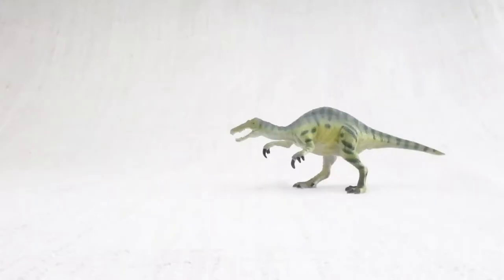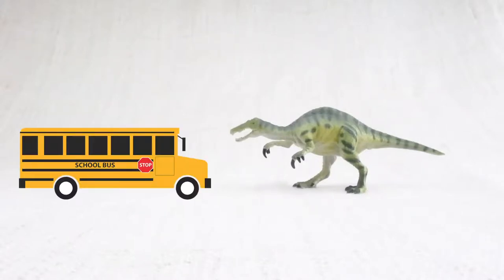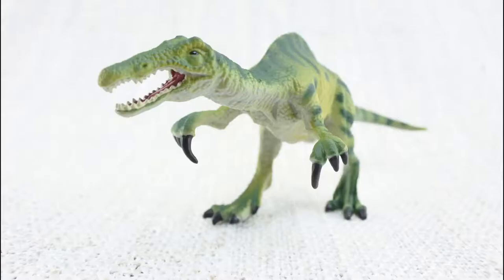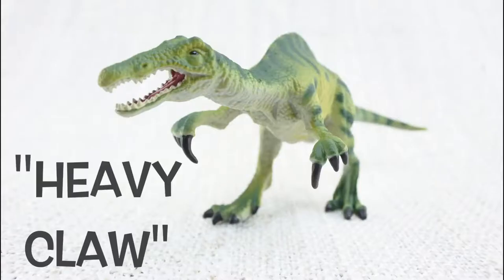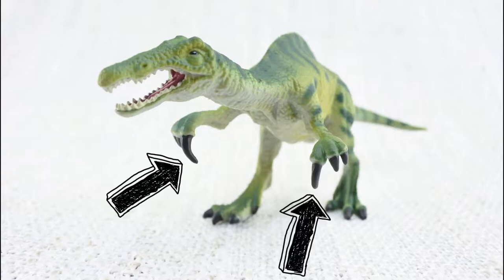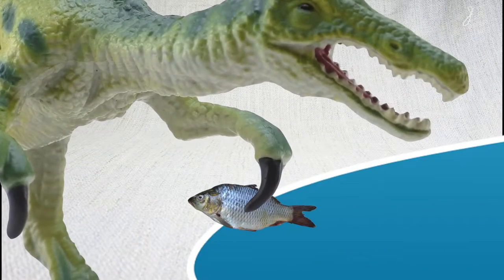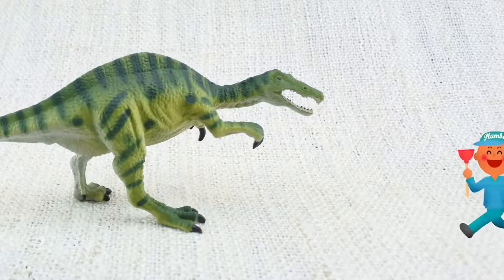So what have we learned? We learned Baryonyx grew to be longer than a bus and weighed as much as a rhino. Baryonyx means heavy claw because it had one large claw on each hand. It was the first dinosaur discovered that ate fish, and it was discovered by a plumber.